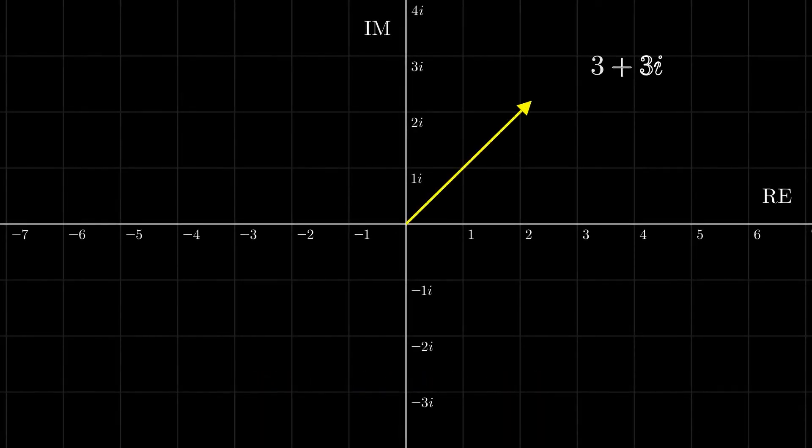This is not the only way of representing complex numbers. Instead of using real and imaginary parts as coordinates, we can represent them through their magnitude and the angle they make with the positive x-axis.